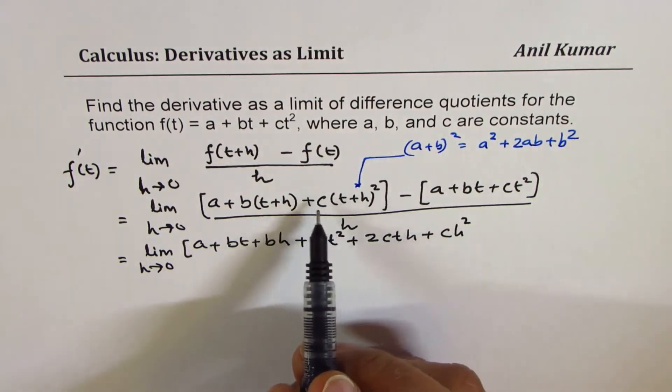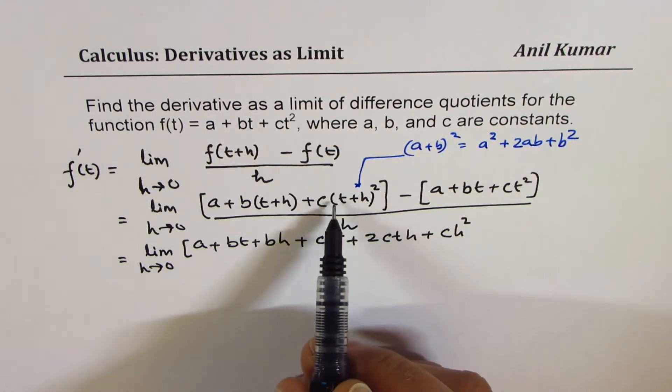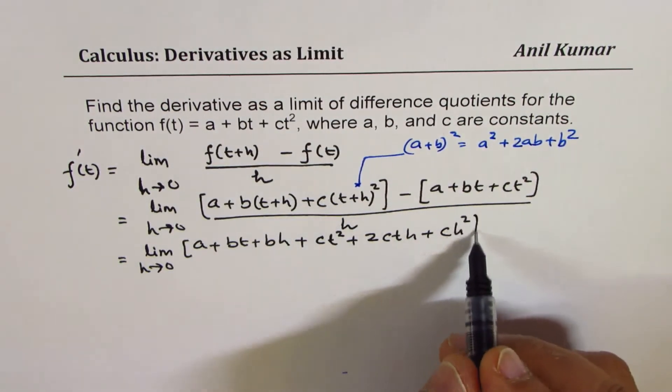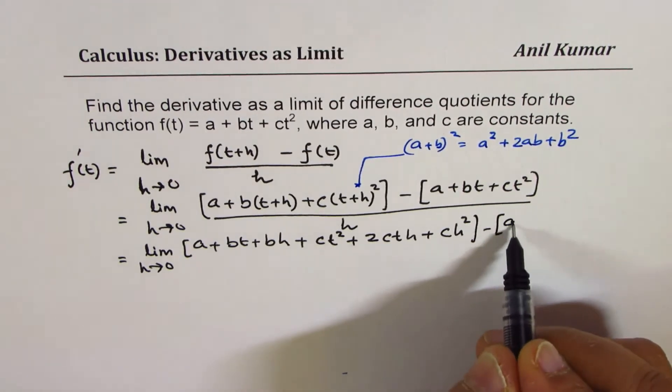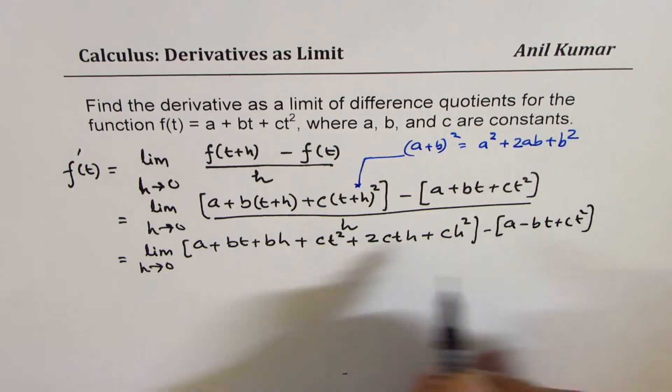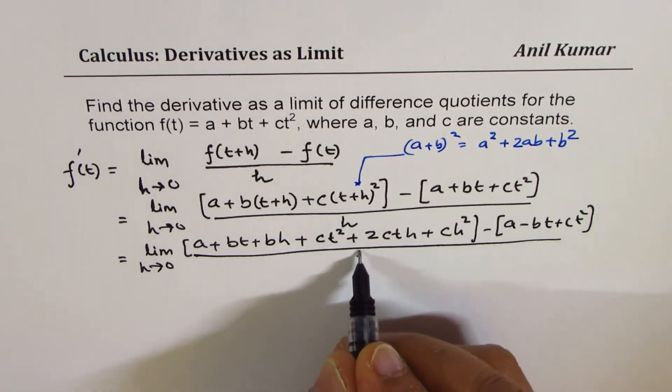What we did was, we expanded using the formula multiplied by c. And now, from here, we'll take away a plus bt plus ct square, everything divided by h.